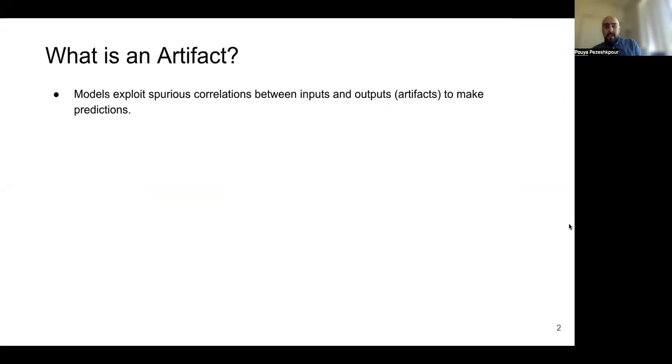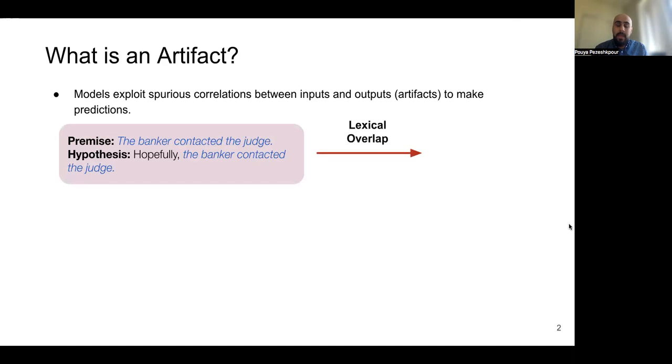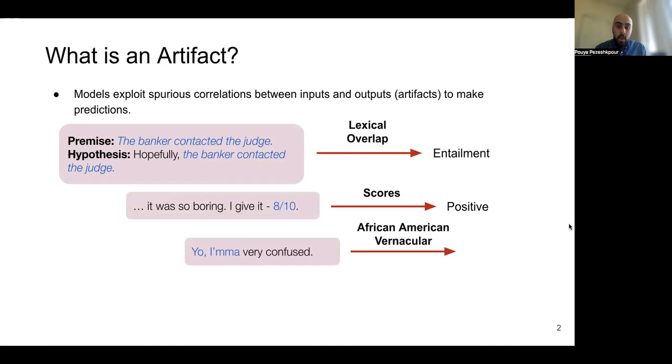So what is an artifact? Artifact is a spurious correlation between features in the input and the labels which model exploit to make its prediction. Examples of artifacts in NLP benchmarks are lexical overlap in NLI tests which model exploit to mispredict instances as entailments, ratings in IMDB reviews, and also African-American dialogues in toxic detection over tweets.